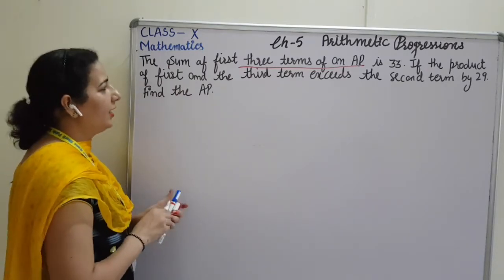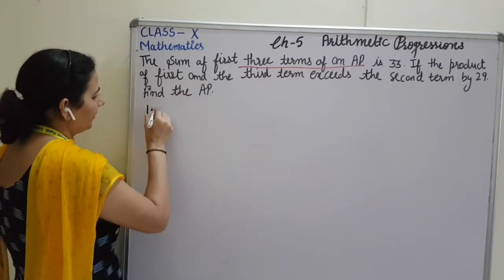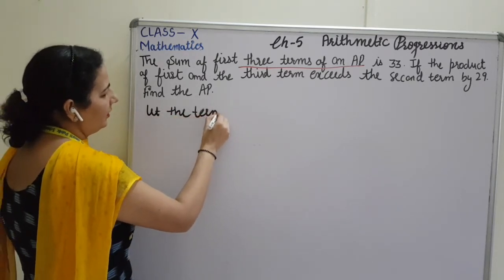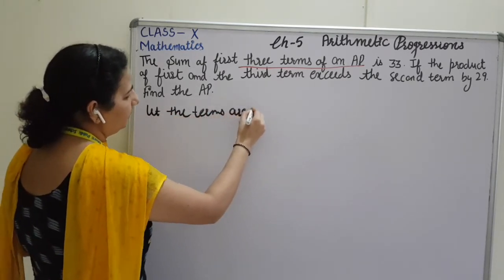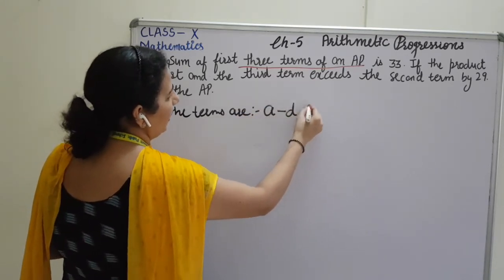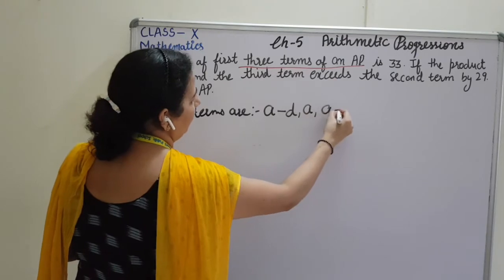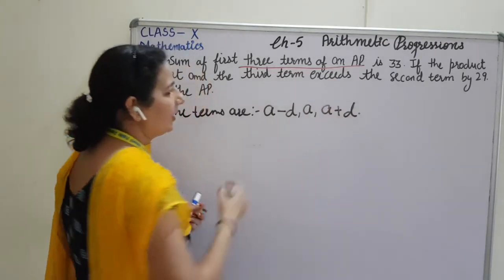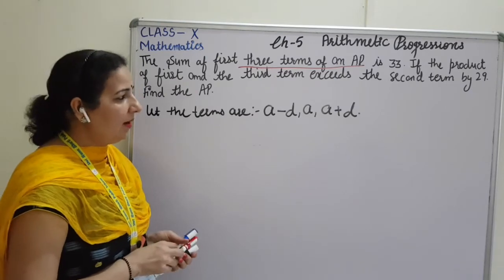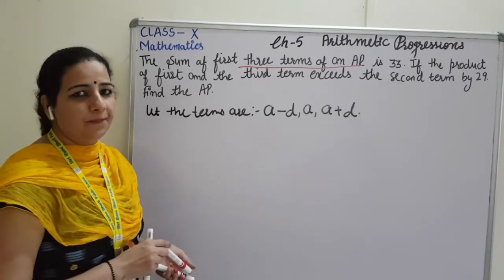So, I will just write here: let the terms are A minus D, A and A plus D. The 3 terms will be A minus D, A and A plus D.